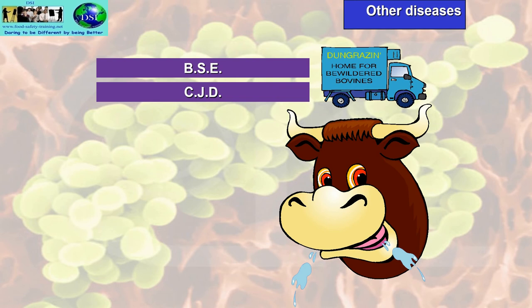The origin of BSE goes back to the 1980s when scrapie-infected sheep were fed to other animals. Scrapie is a prion, and when it came into contact with cattle it caused BSE.